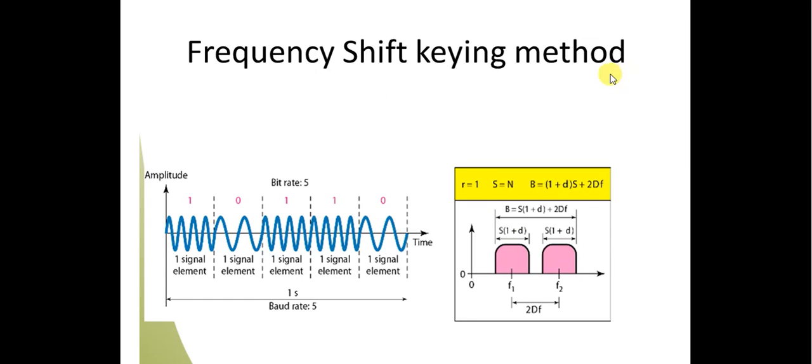For frequency shift keying, the bandwidth is B = (1 + d) × S + 2Δf, where Δf represents the frequency deviation.